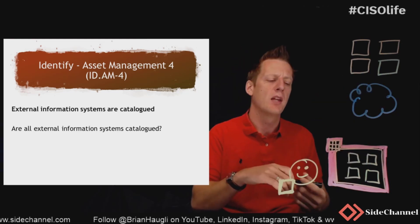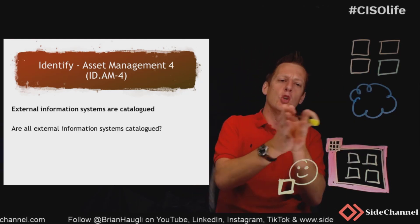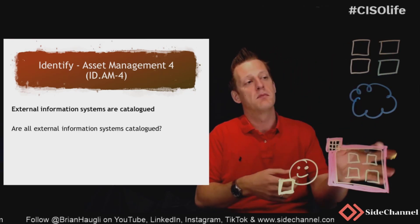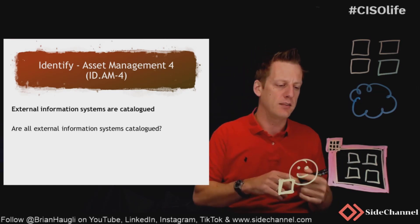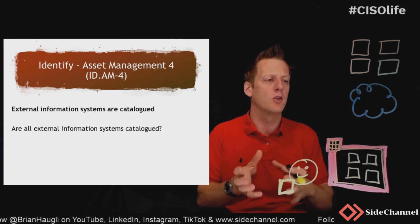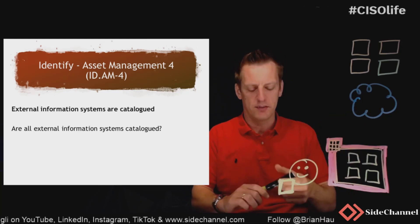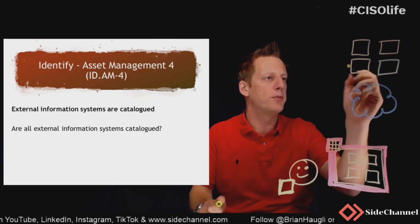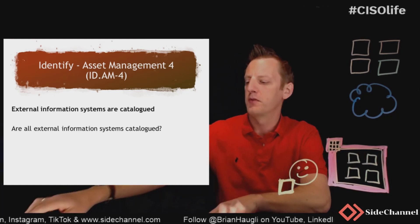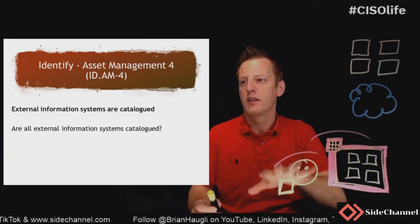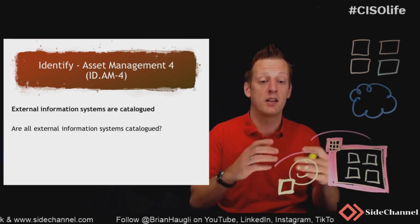One area when looking at this control is: do you have a full understanding of what you also access? This comes into play when you start looking at whether you need a CASB or not — identifying what your people are accessing, whether these represent websites or systems and applications. Your internal and security teams ideally have some type of capability to monitor and protect what's going on with the assets you're managing.